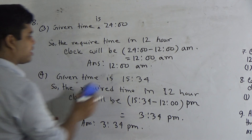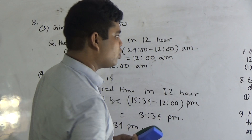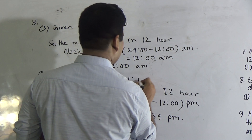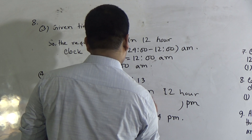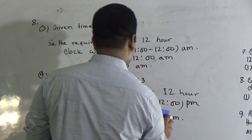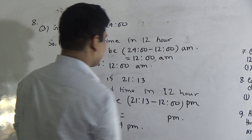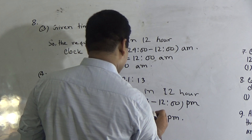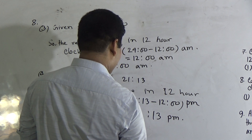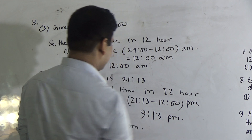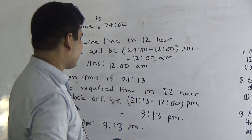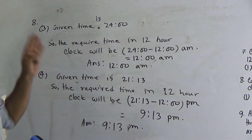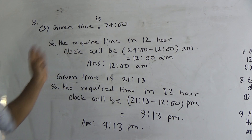Question 8, part 4: the given time is 21:13. The required time in 12-hour clock — we subtract: 21:13 minus 12:00. Since it is greater than 12, we use PM. We subtract: 13 minutes stays, and 21 minus 12 equals 9. So the answer is 9:13 PM. This completes the conversion between 12-hour and 24-hour clocks.